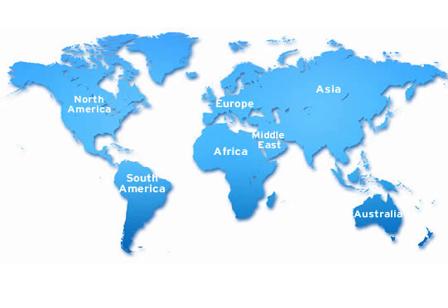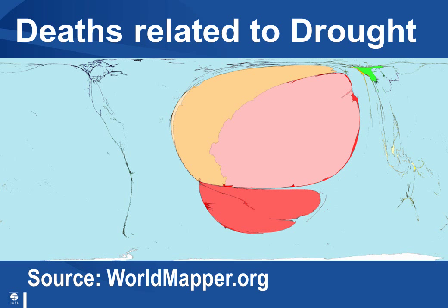I'm going to start things off with a map of the world. This is a world captured in a way that we should all be familiar with. Now here is quite a different view of the world, where the size of the country represents the number of deaths that have occurred as a result of drought events in the past. Three stand out in particular: Ethiopia, Sudan, and Mozambique.